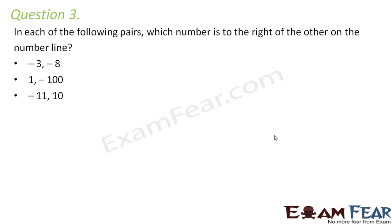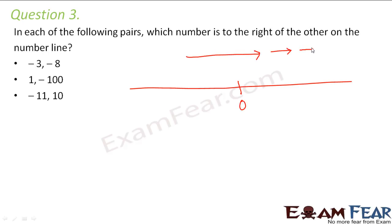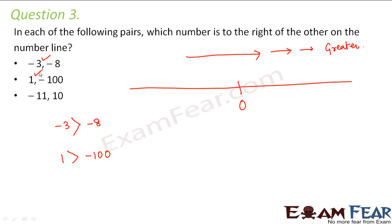Question number three: in each pair, which number is to the right on a number line? Moving right means moving towards greater numbers. Comparing minus three and minus eight: minus three is greater than minus eight, so minus three lies to the right. Comparing one and minus one hundred: one is positive so it is greater, thus one lies to the right of minus one hundred. Comparing minus eleven and ten: ten is positive and greater, so ten lies to the right of minus eleven.